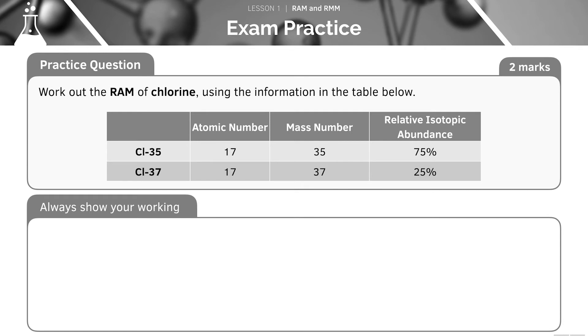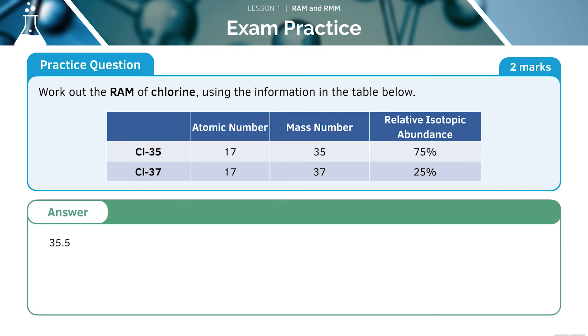Let's take a minute to look at this exam question. Feel free to pause the video here. We're going to work out the RAM of chlorine using the information in the table. The answer to this question is 35.5. Let's see how we got to this.